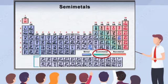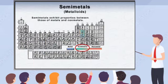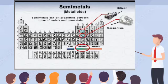Semi-metals, or metalloids, exhibit properties between those of metals and non-metals, which corresponds to their location between these elements in the periodic table. They tend to behave as non-metals in many respects, but they show some electrical conductivity, which is a characteristic of metals. However, rather than being electrical conductors, several of the semi-metals, silicon and germanium in particular, are known as semiconductors.